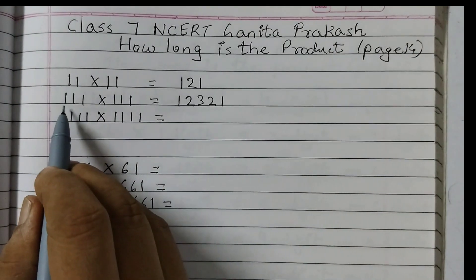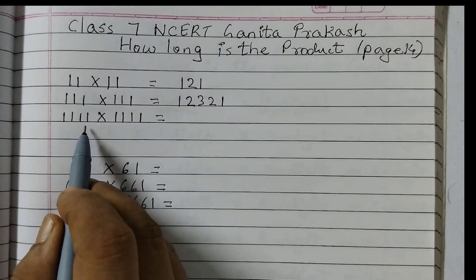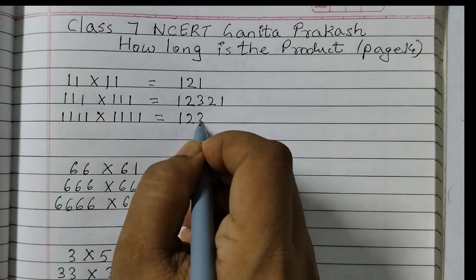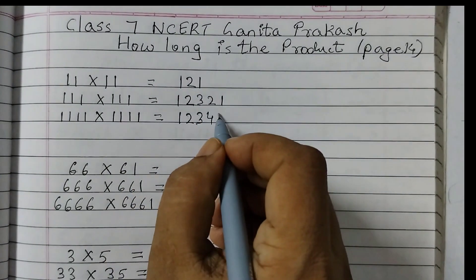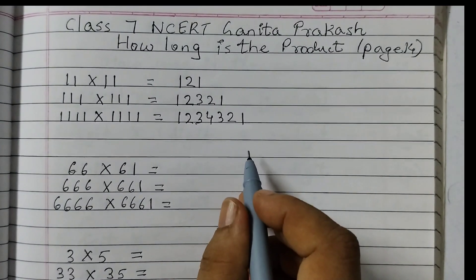Right? And this is 1, 2, 3. Three ones are there, so we reach till 3. Now suppose 4 is there. Four ones are there. So 1, 2, 3, 4 and again 3, 2, 1. So this is the pattern that is being followed.